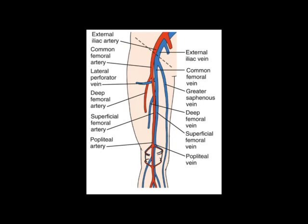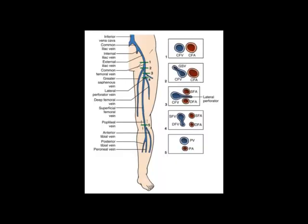The superficial femoral vein then courses distally to the level of the popliteal fossa, where it becomes the popliteal vein, sitting superficial to the popliteal artery in the popliteal fossa.